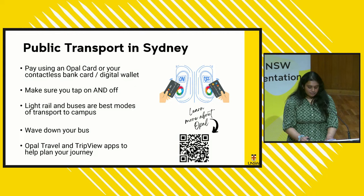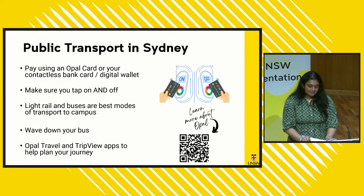Apps such as Opal Travel or TripView are the best for figuring out how to get around Sydney. Also know that Opal is used in and around the Sydney area. If you are looking to travel regionally around the state or interstate, you will need to purchase an alternative ticket or transit card.